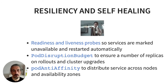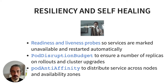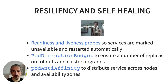For resiliency and self-healing, you need readiness and liveness probes to mark services as unavailable and restart them when something is wrong. You need Pod Disruption Budgets to ensure a minimum number of replicas during rollouts and cluster upgrades — ensuring at least one pod of a specific service is always running. And you need pod anti-affinity to distribute services across nodes and availability zones, making sure pods don't all end up in the same availability zone.